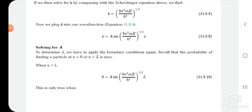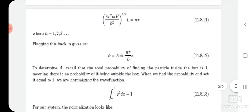After finding k, we apply the second boundary condition. Recall that the probability of finding the particle at x equals L is zero. Therefore zero equals A sin[(8π²mE/h²)^(1/2) · L]. This is true only when (8π²mE/h²)^(1/2) · L equals nπ, where n equals 1, 2, 3... Plugging this back gives ψ equals A sin(nπx/L).